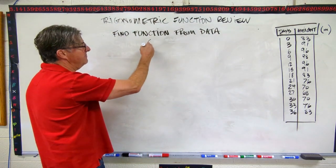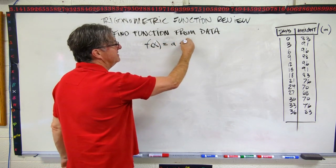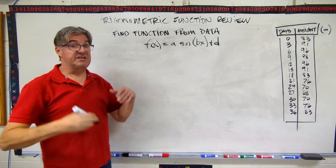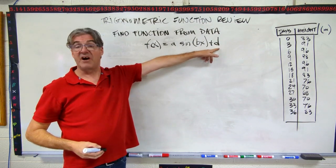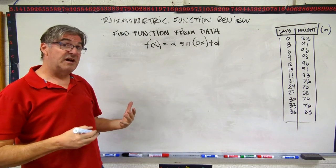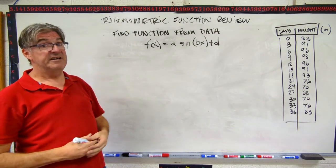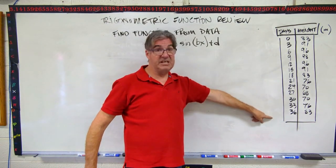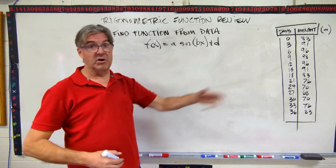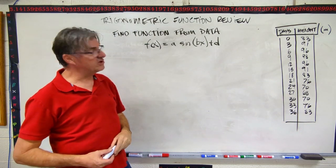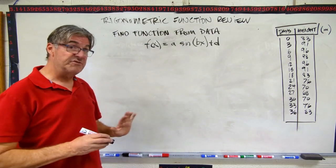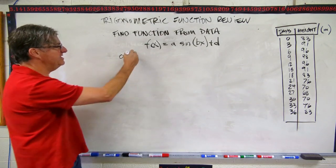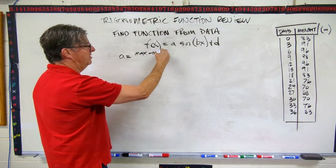So our function is going to be some form like this. f of x equals a sine of bx plus d. So now we just need to figure out what our a's and our b's and our d's are so we can plug them in and we can write the function. So this time, you don't have a graph already to check your work. Now you can, with the fancy calculator, you can put these data points into the calculator and it will draw a graph for you or at least show you the data points so you get a feeling for what this function looks like graphically. But we don't need to do that. And I'm just going to do this algebraically. Okay. So let's do a first. What is a? A is the max minus the min over two.